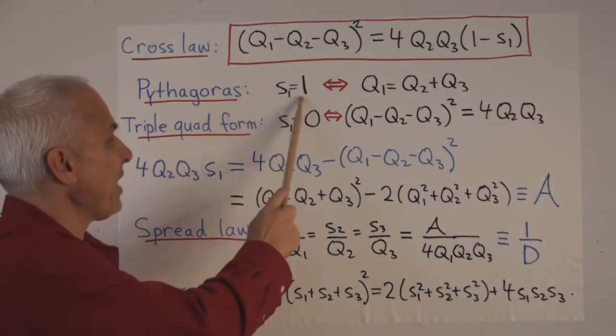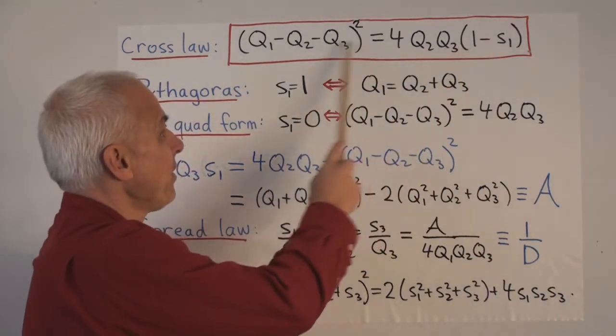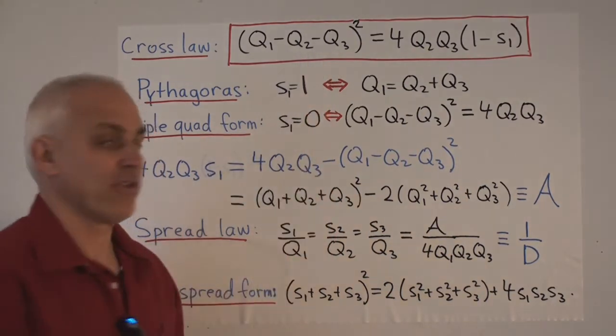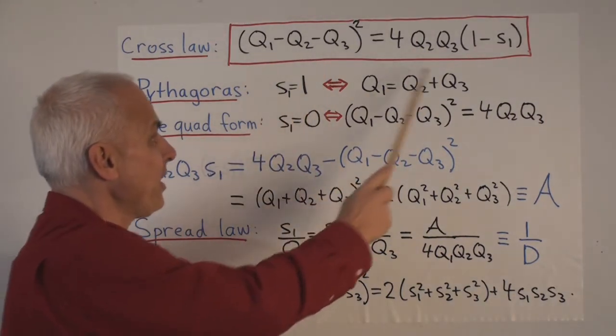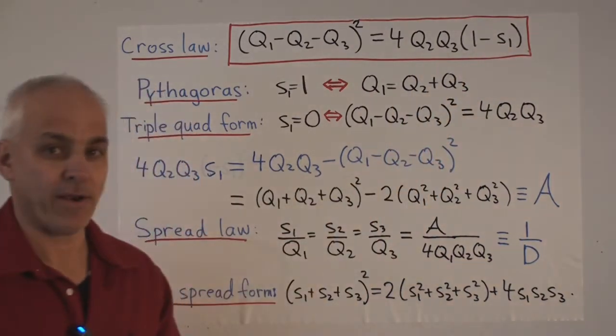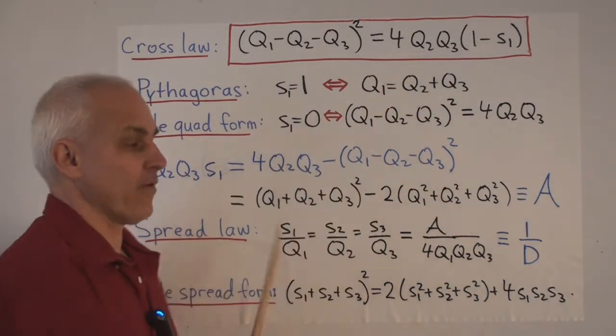Pythagoras says that if S1 is 1, then Q1 equals Q2 plus Q3. And conversely, if Q1 equals Q2 plus Q3, then S1 has to be equal to 1. That's immediate from the form.